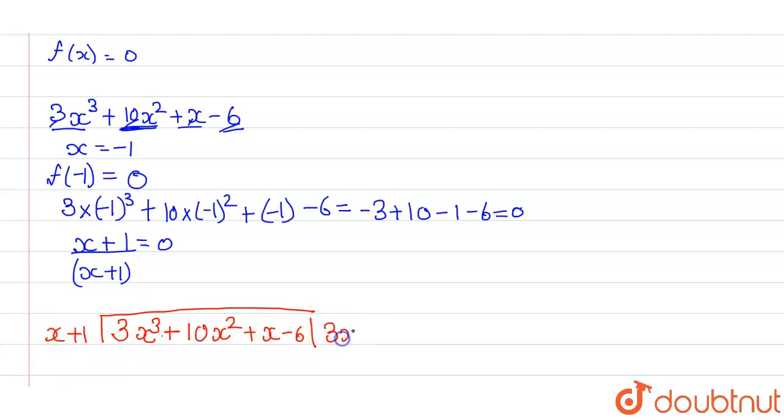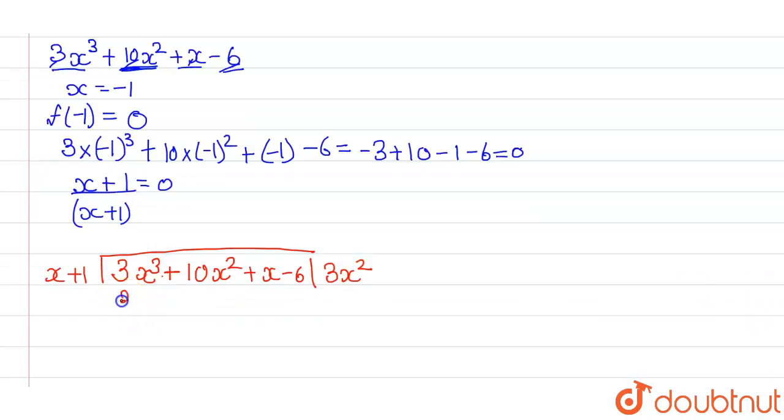We have to multiply 3x square to it. This will become 3x cube plus 3x square, minus minus sign change. This will leave 0, 7x square, plus x.